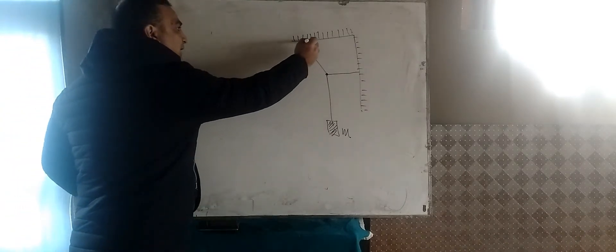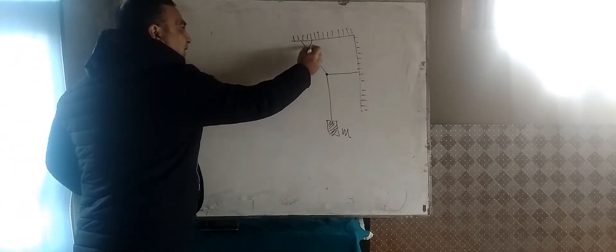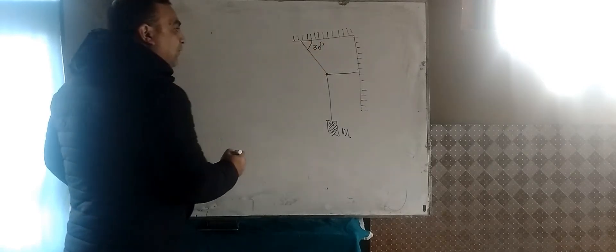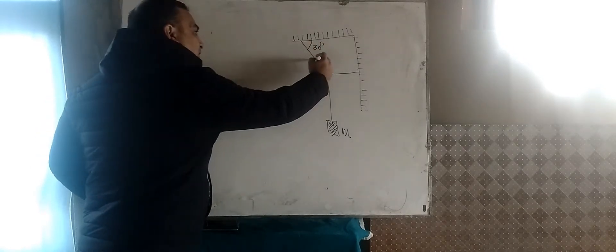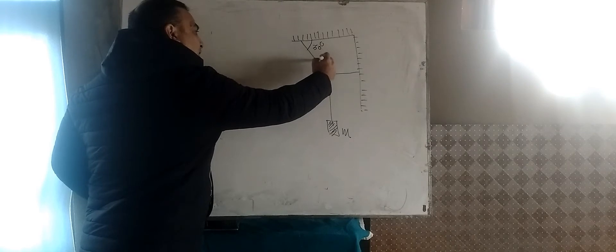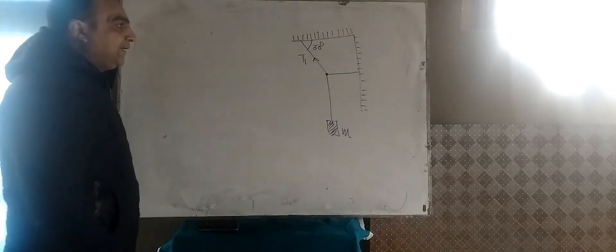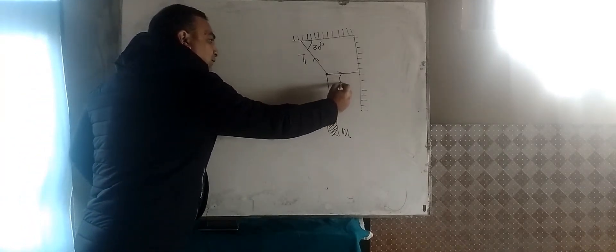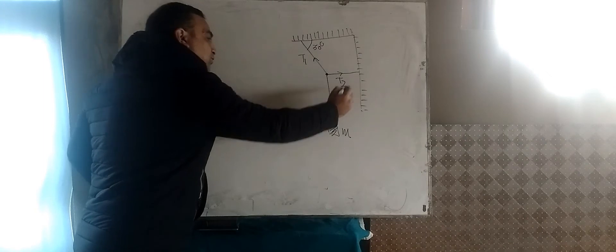If I assume that this angle is, say, for example, 30 degrees, and obviously this string will have some tension on it. Suppose that tension is T1 and this will also have a tension in this direction. Suppose that tension is T2.